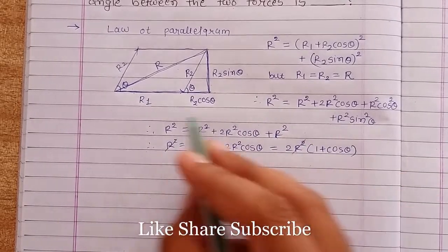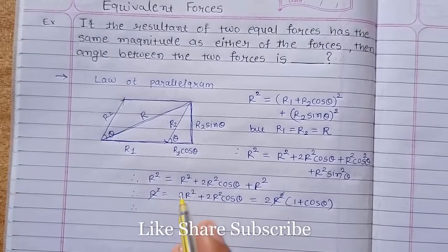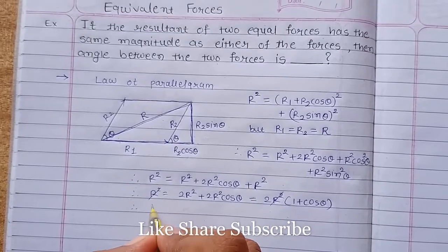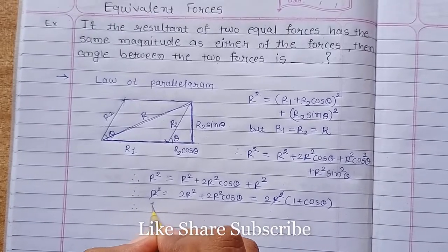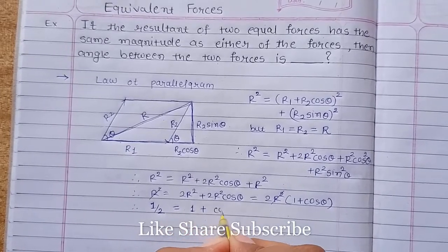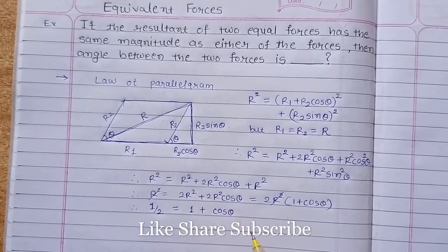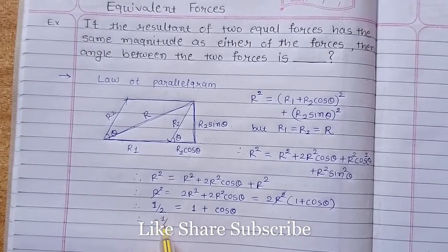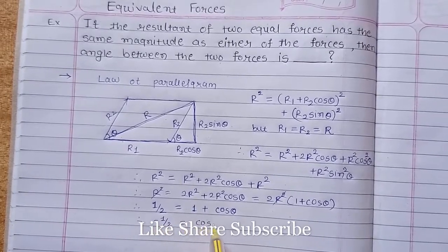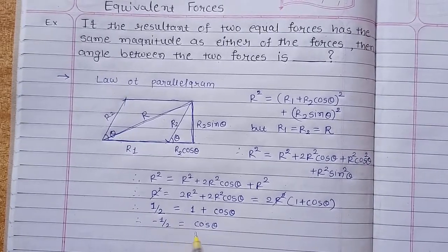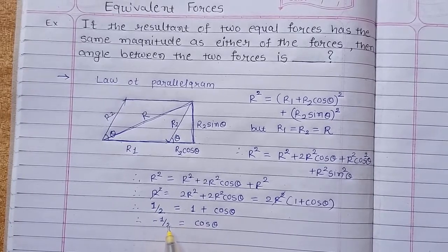The R squared terms cancel, so we simplify to get 1/2 = 1 + cos theta, which gives cos theta = -1/2. According to the unit circle, a negative cosine value falls in the second quadrant.